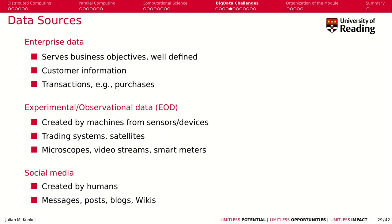Let's look at data sources. We have enterprise data, which includes things like customer information, typically captured in transactions and purchases — like what you buy when grocery shopping. Enterprise data bundles business objectives and it's well defined what you collect and for what purpose. The next type is experimental and observational data, created by machines from sensors or devices such as trading systems, satellites, microscopes, video streams, and smart meters. This is machine-generated data.